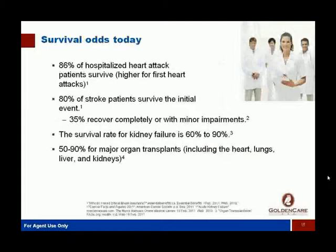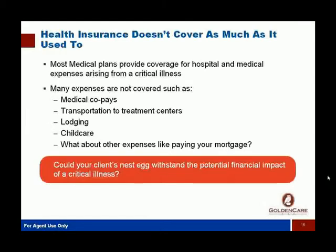80% of stroke patients survive the initial event, and 35% — over a third — have absolutely minor impairments or no impairments at all after a stroke. People are surviving through these conditions. Even with transplants and kidney failures, the survival rate is incredibly high. What critical illness agents remind their clients is that even though you have health insurance, if you have a critical illness there are lots of uncovered expenses: medical co-pays, loss of income, transportation, child care — all things that can be a major, major cost.